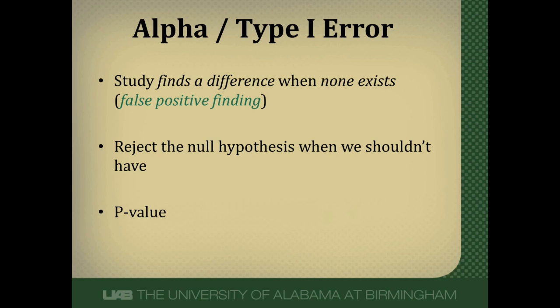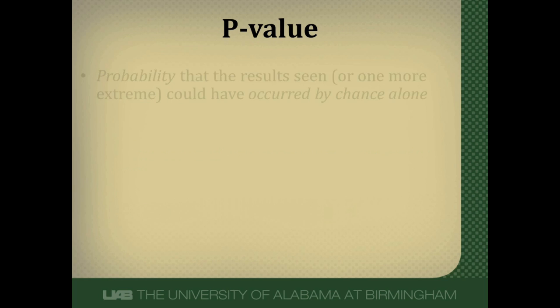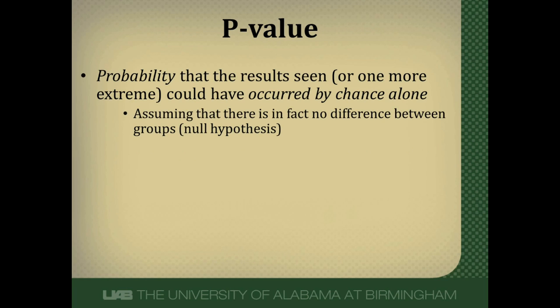Our p-value is our alpha or type 1 error rate. Traditionally when we design a study we set the alpha or type 1 error rate at 0.05 or less, and that is where the concept of a p-value being statistically significant at less than 0.05 comes from. So a p-value is just the probability that the results we see in a study — or ones more extreme — could have occurred by chance alone, assuming there is no difference between the groups.